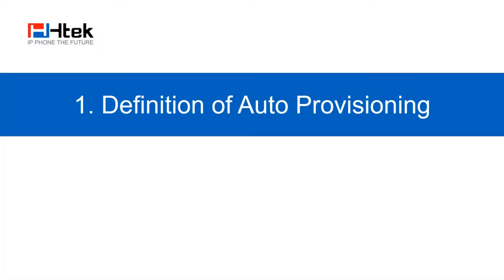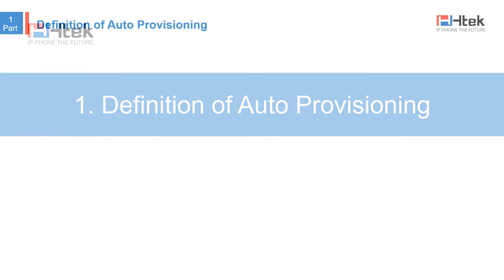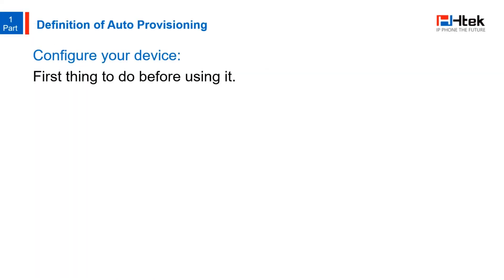So firstly, what is auto-provisioning? Just like any other electronic devices, IP phones, when we get one, the first thing we need to do is to configure it. We can do it directly on the interface of the phone, or log onto the phone's webpage and operate on the browser. This is okay when we only have one or only a few devices to configure, but when we have hundreds or even thousands of devices to configure, it's no longer efficient. In this case, provisioning is a much better way.